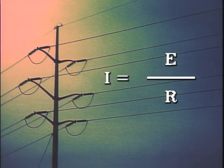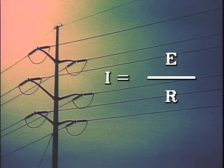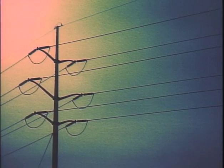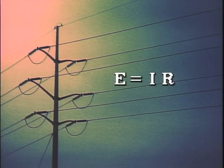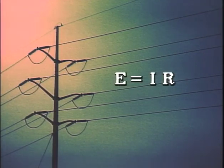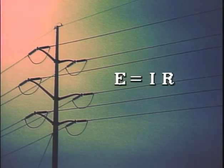But let's look at another case. What if current and resistance in the circuit are known and voltage is what you're looking for? The equation can then be rearranged to E equals I times R and solved for voltage. The Ohm's Law equation can be arranged to solve for current, voltage, or resistance.